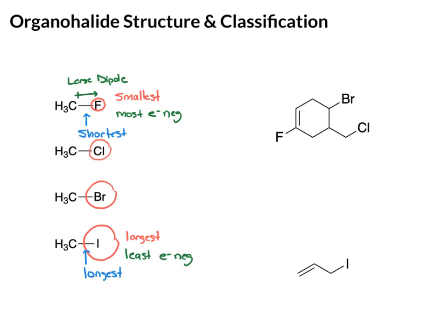We also know that bond length goes hand in hand with bond strength. So because the C–F bond is the shortest, it's also the strongest, and the C–I bond, being the longest, is the weakest.